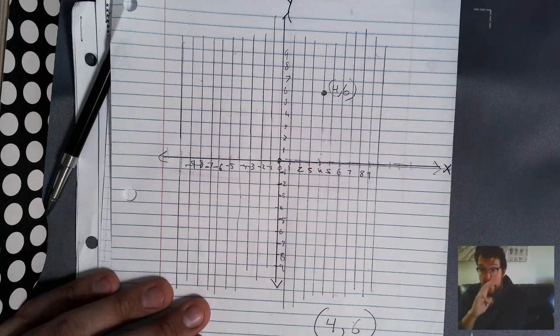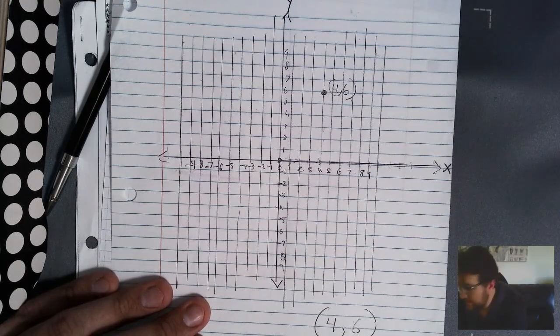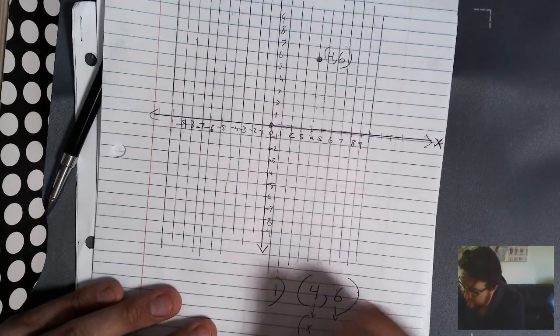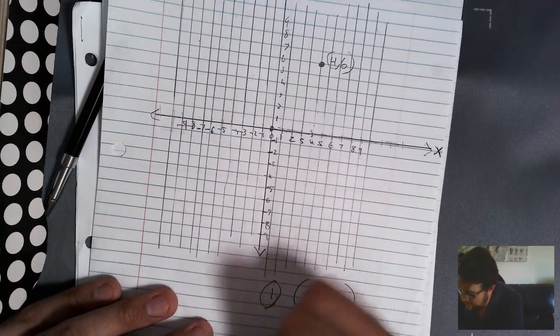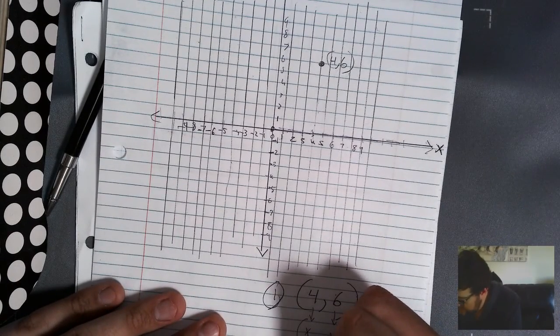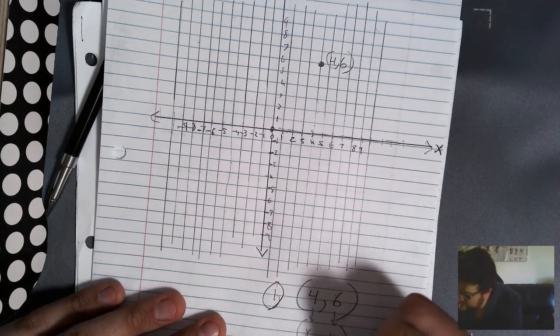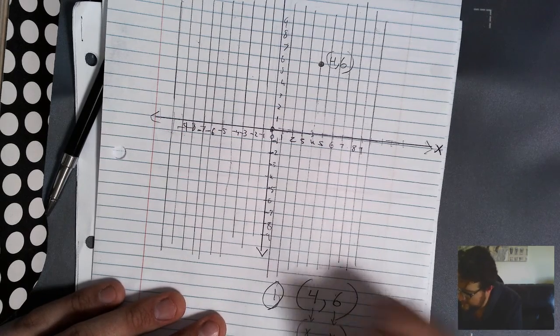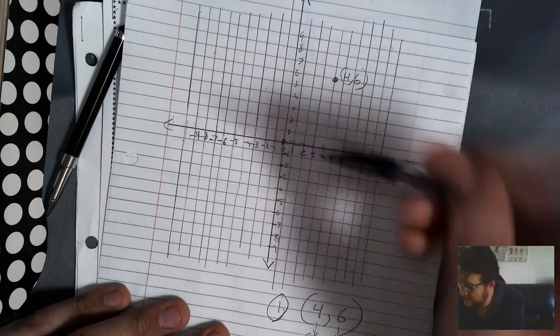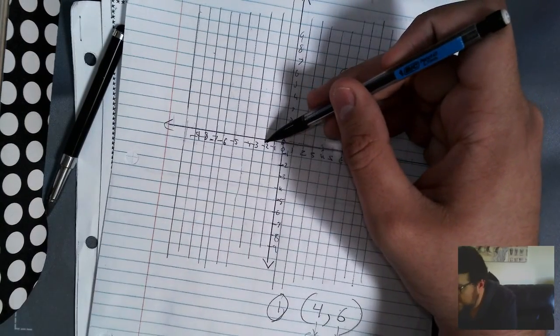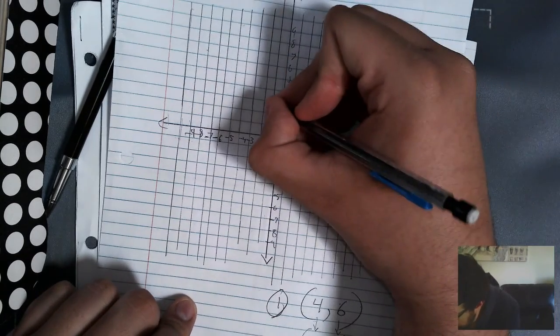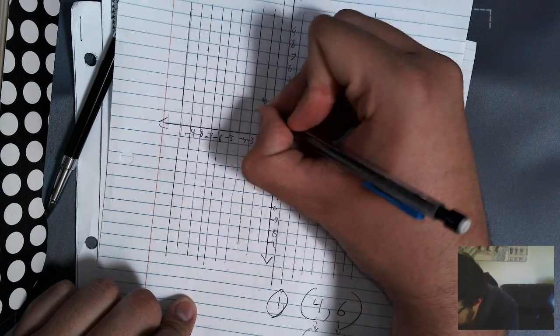Actually, you know what, I'll do three more just because I think my audio will be better here. So let's just pretend that's our first point. Let's say this is our second point. Our second point is, who knows, negative two, comma, three. Okay, so we do, again, X first. Negative two, but the three is positive, so we're still going up. One, two, three. Alright, there's negative two, three.